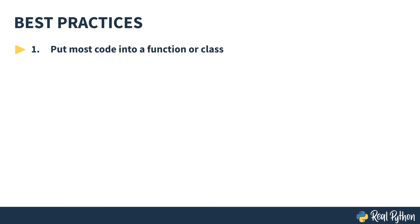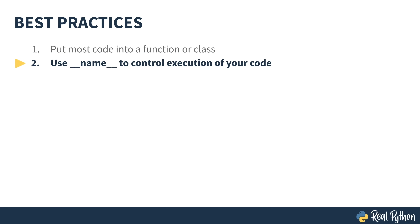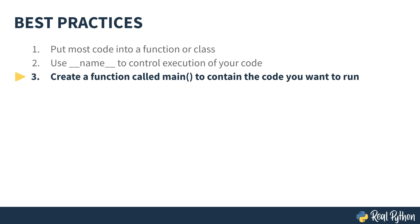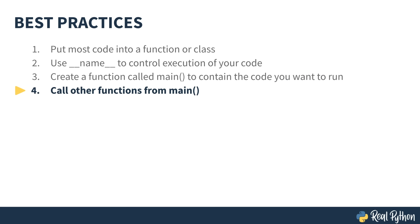These four best practices are: 1. Putting most code into a function or class. 2. Using __name__ to control execution of your code. 3. Using a function called main to contain the code you want to run. And finally, 4. Calling other functions from main. So let's break these down, starting with putting most code into a function or class.